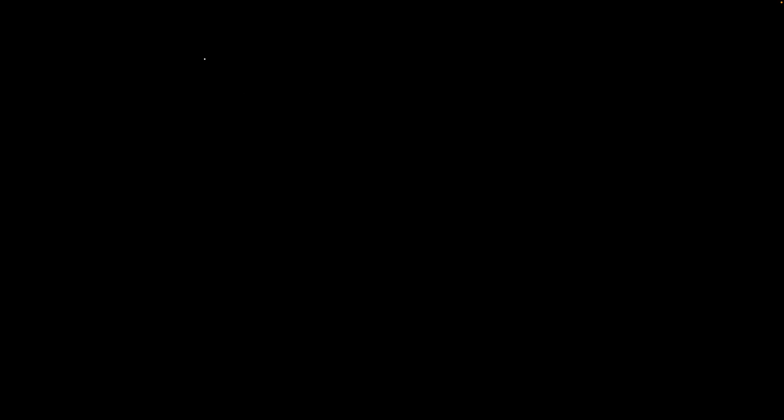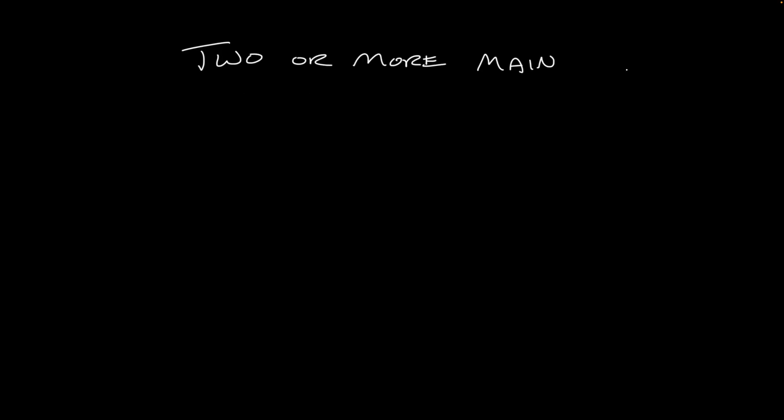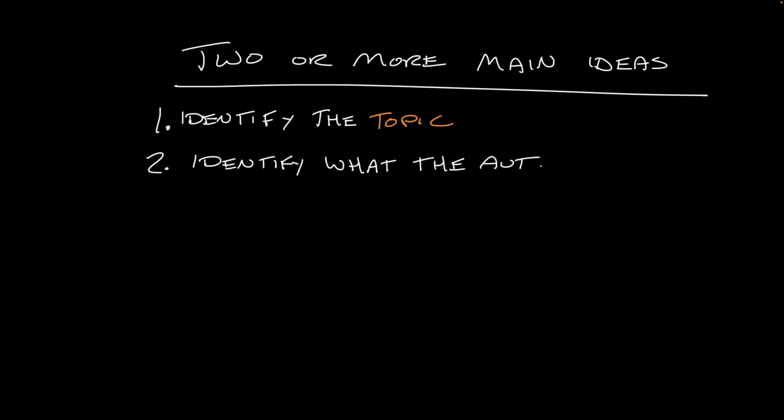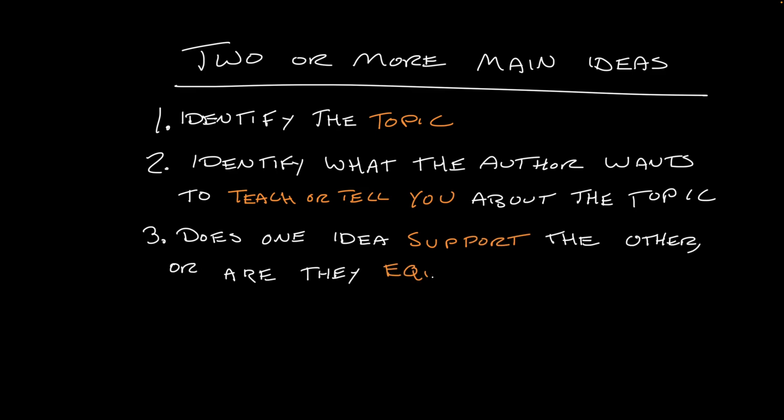To identify when a text has two or more main ideas, first, identify the topic. Then, identify what the author mainly wants to tell or teach you about that topic. If you think a text has more than one main idea, ask yourself, does one of the ideas support the other one or are the two ideas equally important? If they're equally important, congratulations! You've found a text with two main ideas.